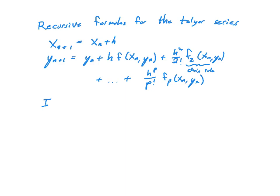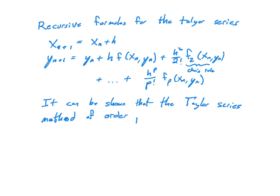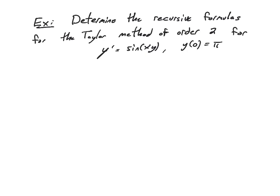I want to make a note here that it can be shown — though we may not have time this semester — that the Taylor series method of order p has a well-defined rate of convergence. So let's do an actual example: determine the recursive formula for Taylor's method of order 2 for y prime equals sin(xy), with y sub 0 equal to pi.